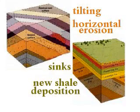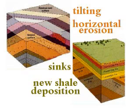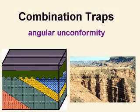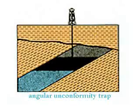Then there is horizontal erosion at the surface. Then it sinks below sea level and there is a new shale deposition. This new shale is lithified into a cap rock. And finally, oil migrates into the reservoir rock and is trapped by the shale. Lots of steps have to occur before we have a combo trap. Geologists and petroleum engineers look for these traps because they can hold large amounts of oil and gas.